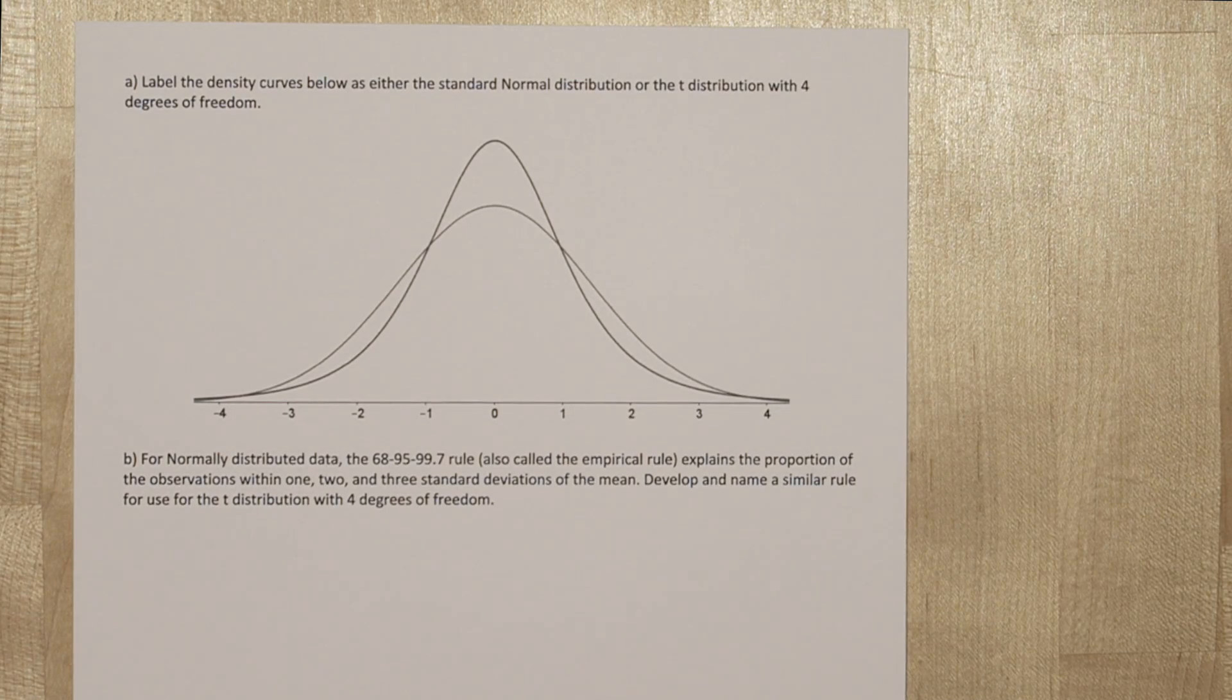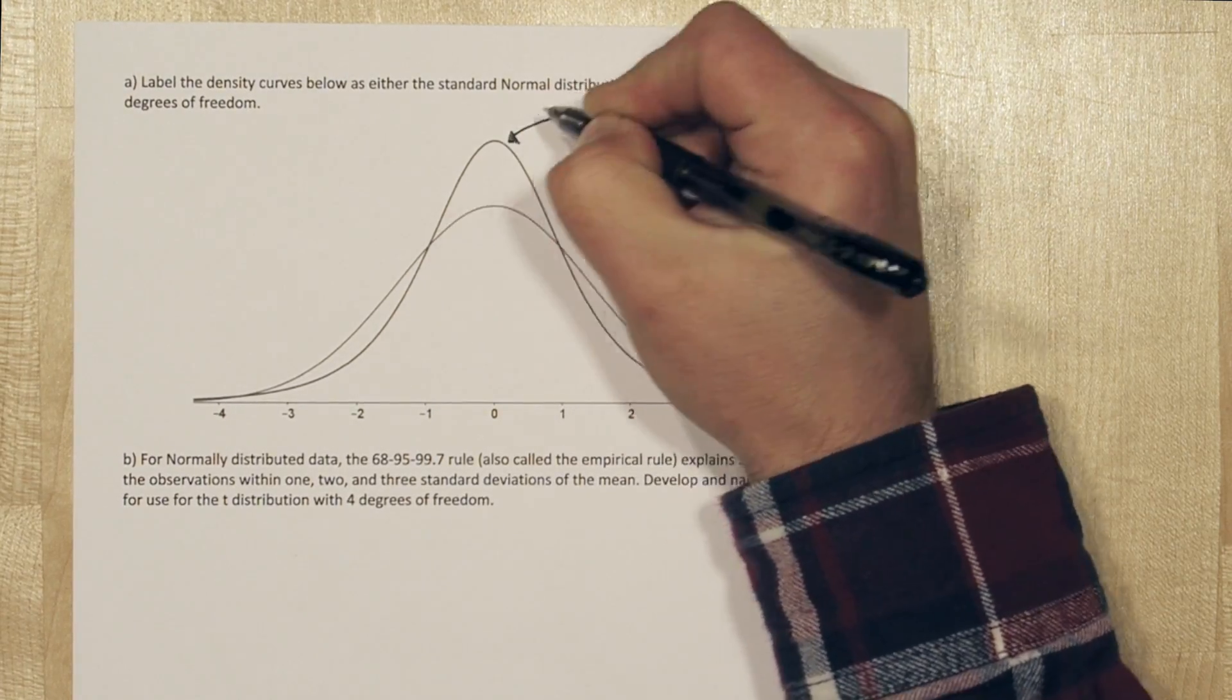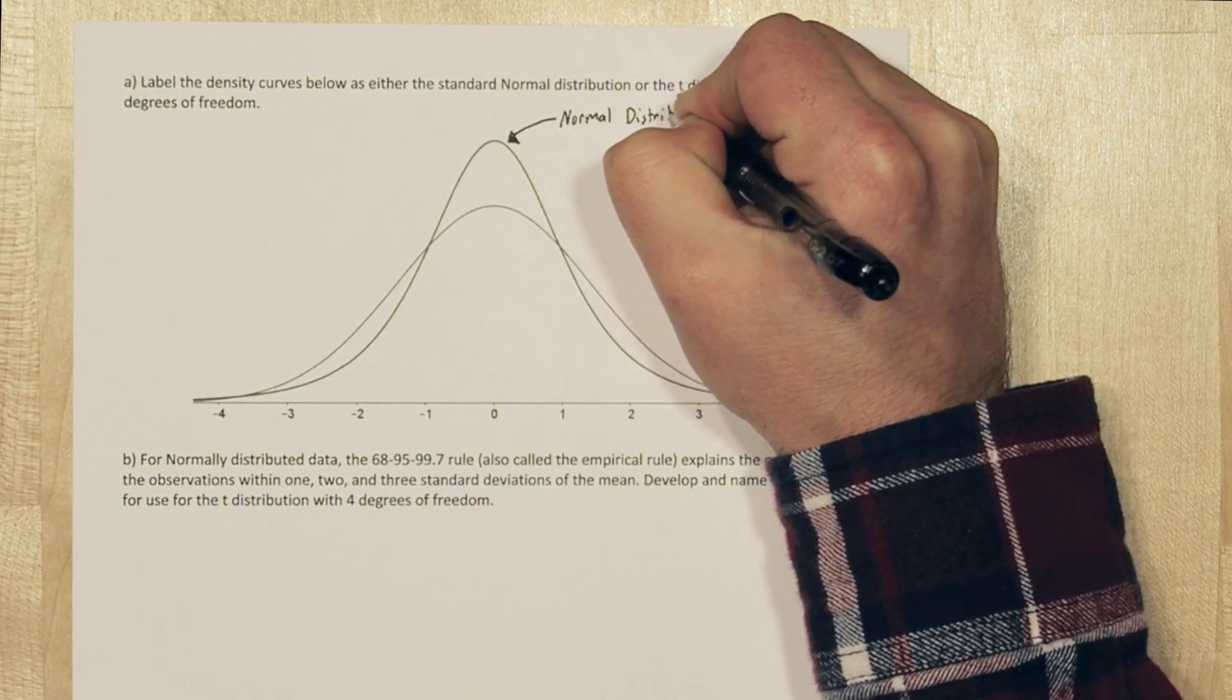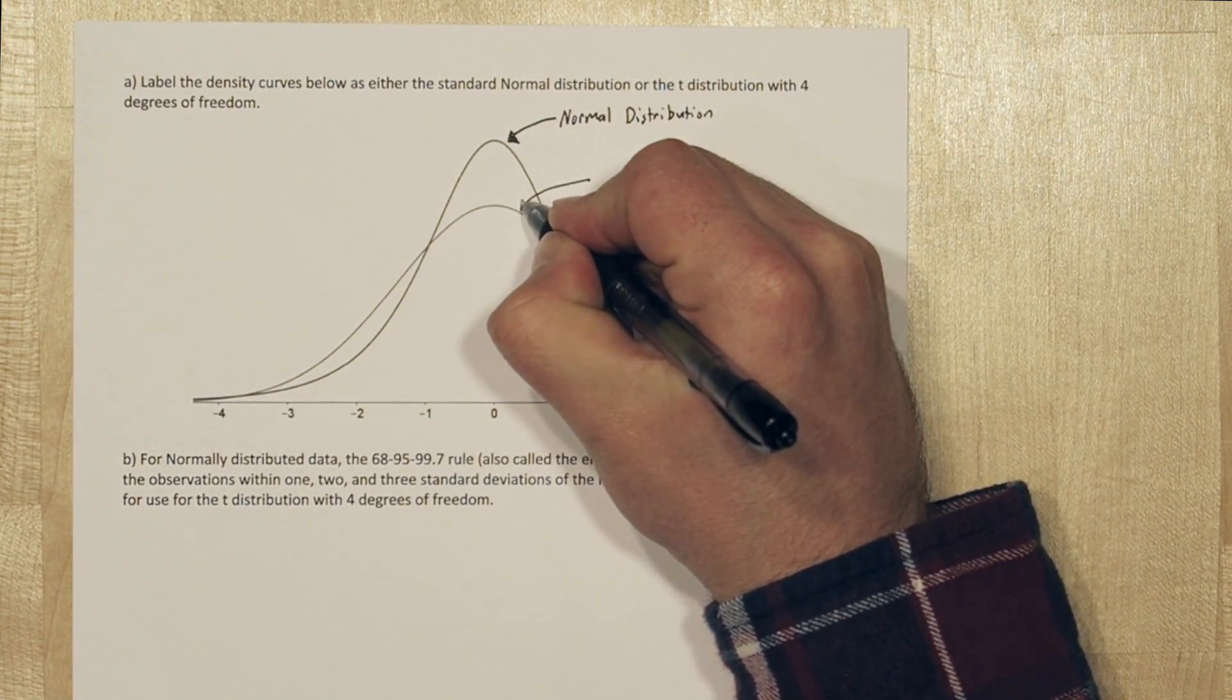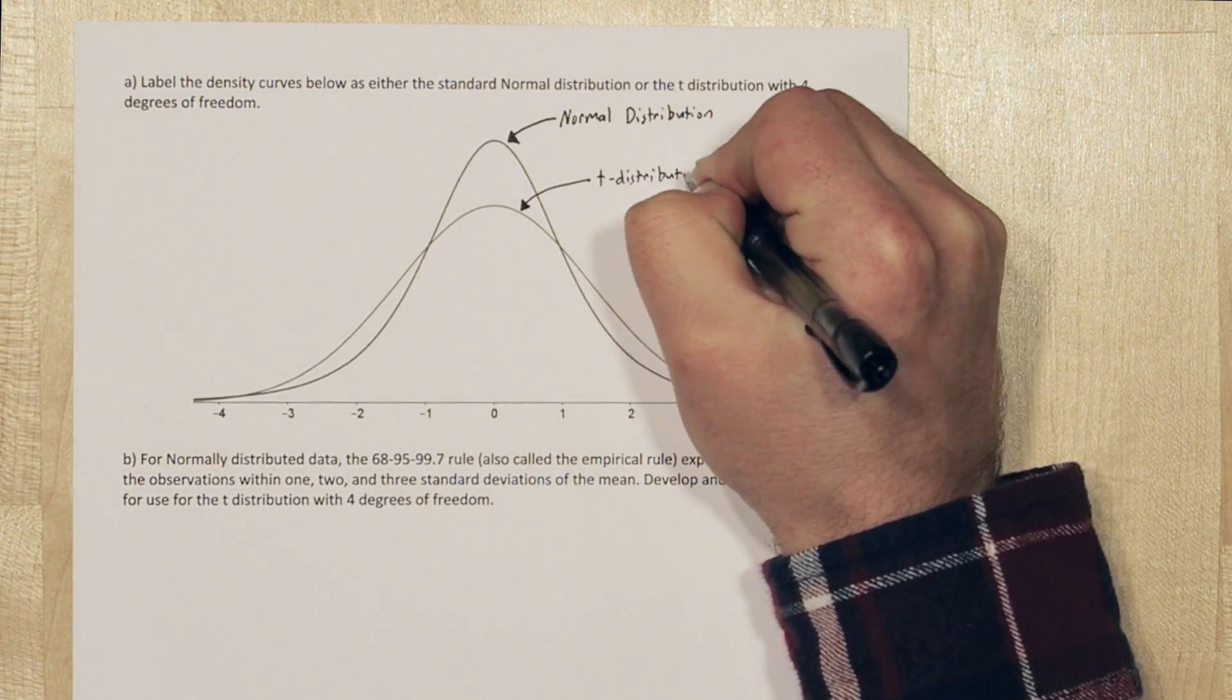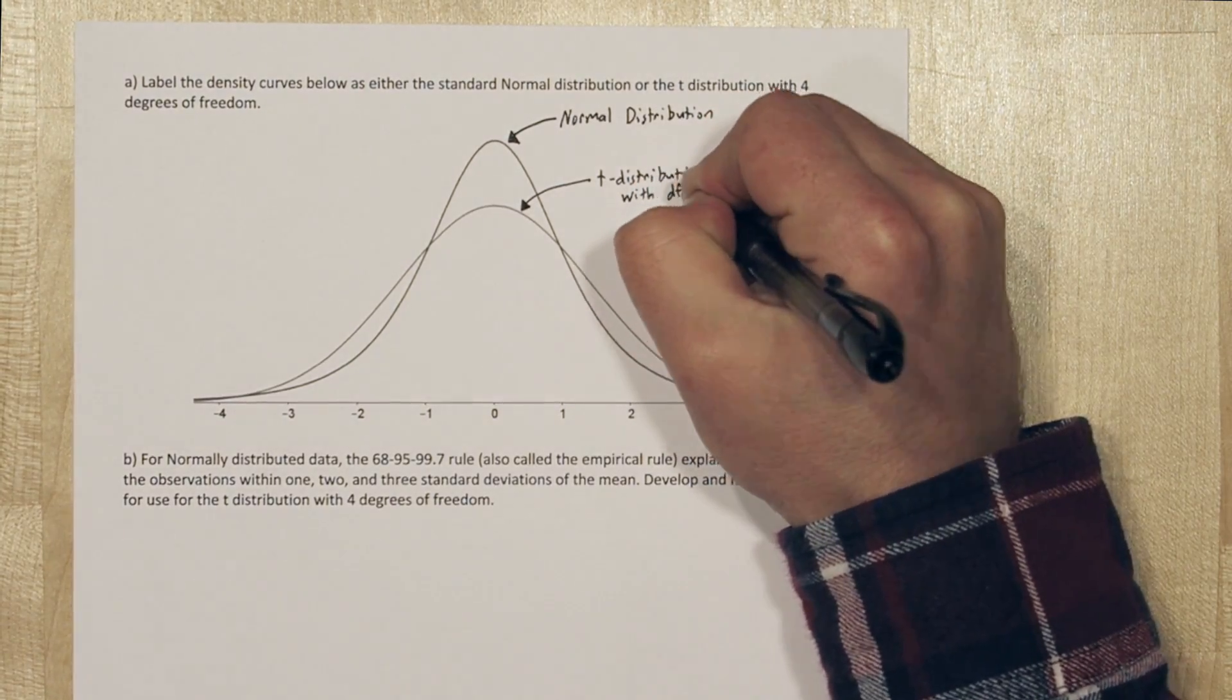We can use a few properties of the t-distribution to help us figure out which is which. First, the t-distribution has shorter peaks and also fatter tails. So we can see that the larger peak is going to be for the normal distribution, and that also corresponds to slimmer tails, and the shorter peak is going to be the t-distribution with degrees of freedom 4, with the fatter tails.